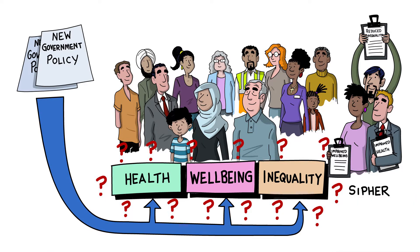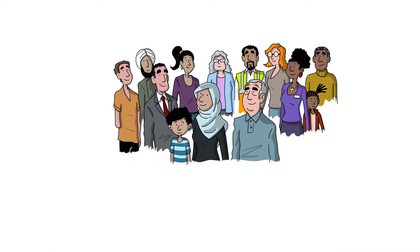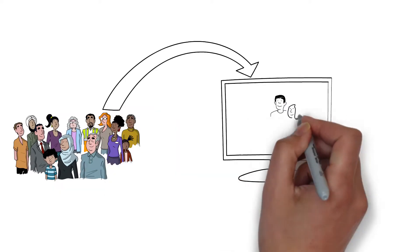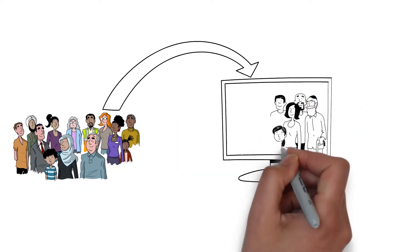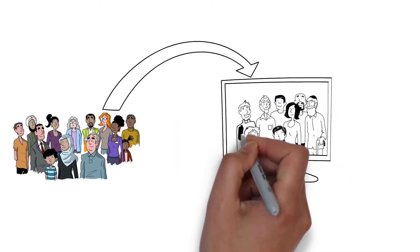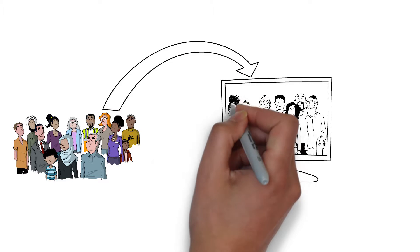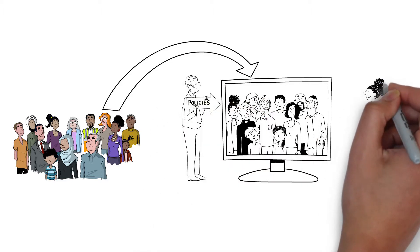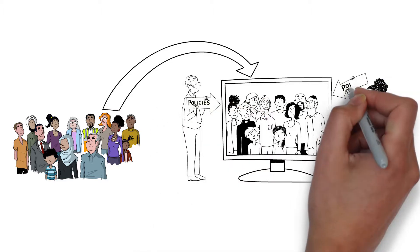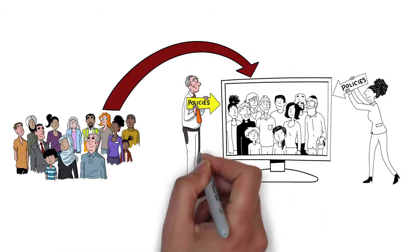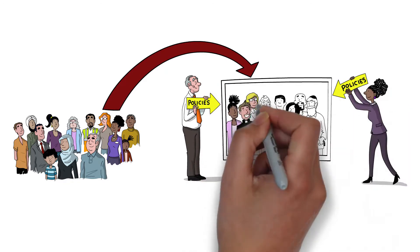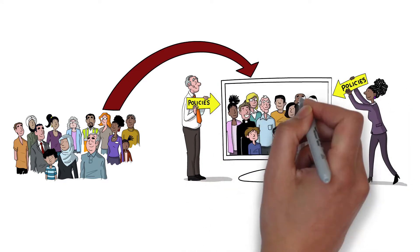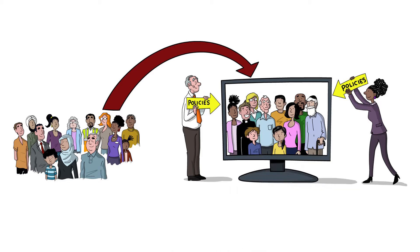We're building a digital twin of the UK population, known as a synthetic population, that we can use to examine how proposed policy changes might affect people with their various characteristics and behaviours in different ways. But what is a synthetic population and how do we build one?